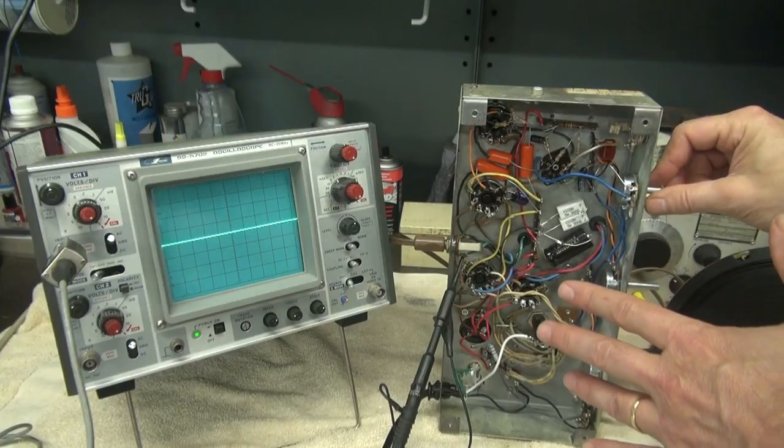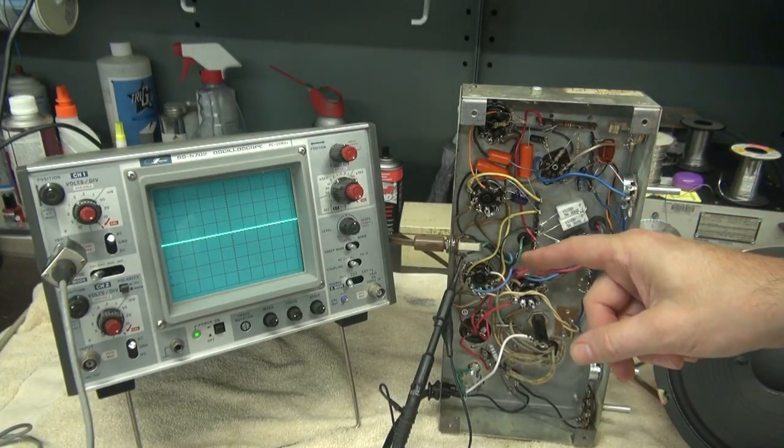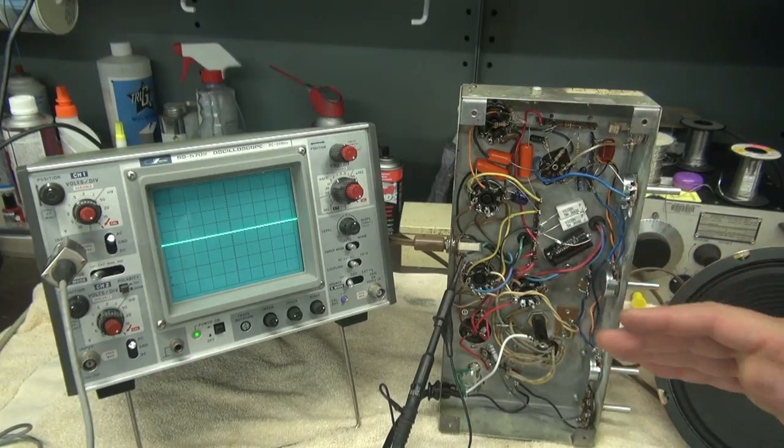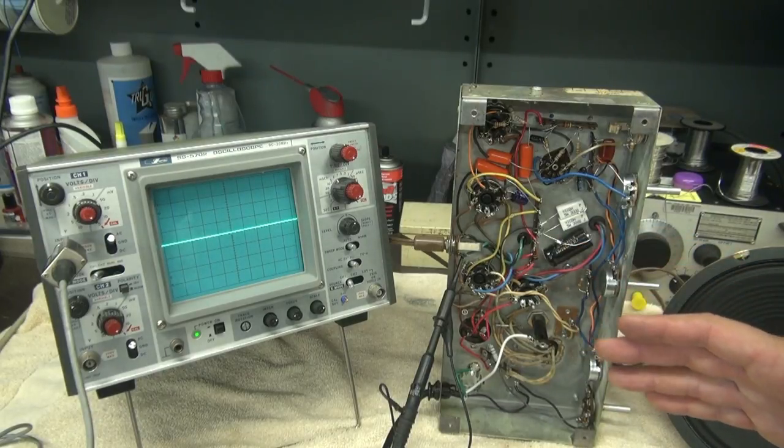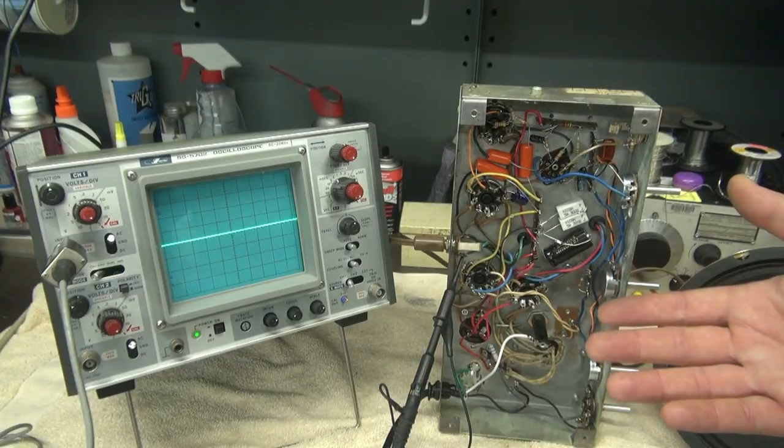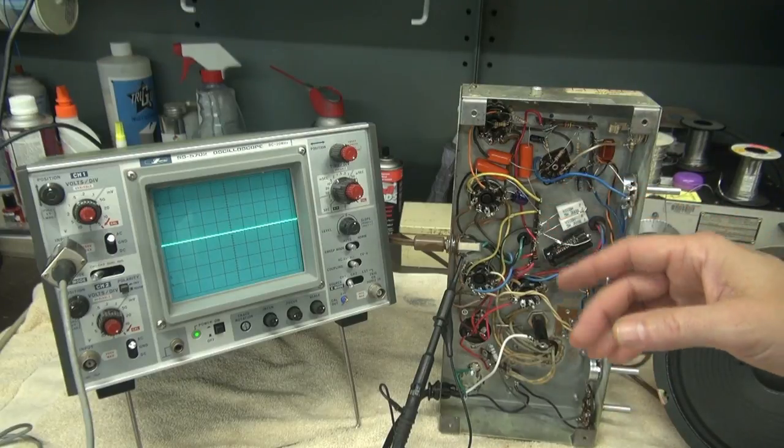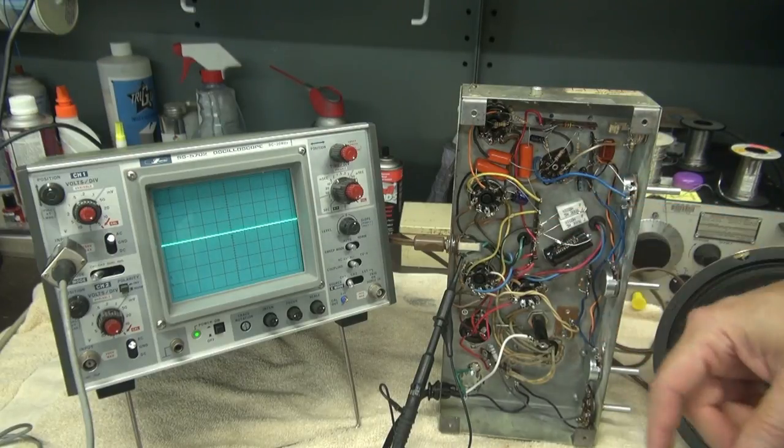What's happening is we've got parasitic oscillation going on between the output tubes. That's because when this amp was built I did not put grid stopper resistors on the 6V6s. And if you look at the earlier schematics of Fender Princetons they didn't use them either. But later on they did. So I'm guessing what we have going on here is parasitics between the two 6V6 tubes.